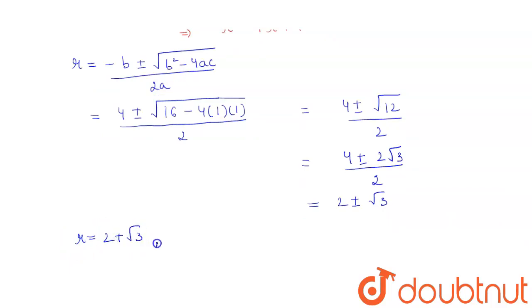2 plus under root 3 and r is equal to 2 minus under root 3. As we earlier discussed that the value of r is greater than 1, so this value cannot be possible. So possible value of r is 2 plus root 3.